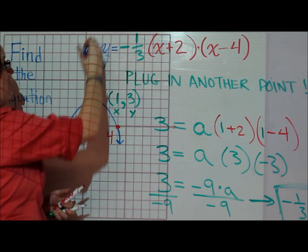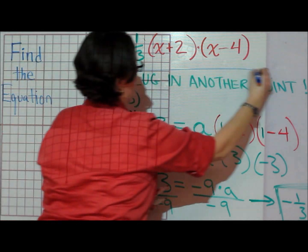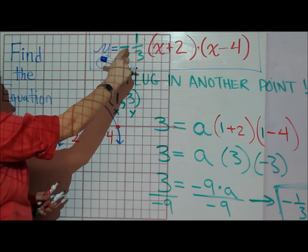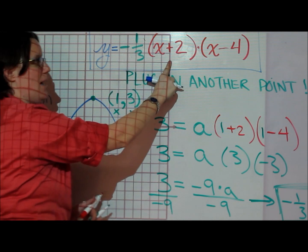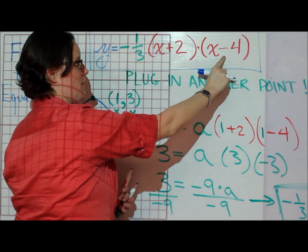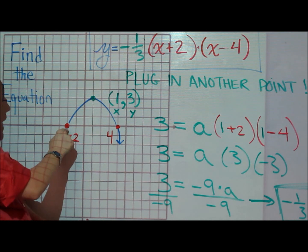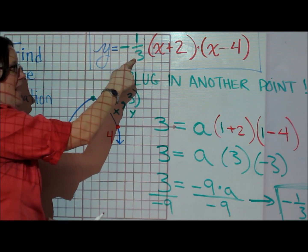And that is my answer to the question: y equals negative 1 third times x plus 2 times x minus 4. It has these x-intercepts and this suggests that it's sad.